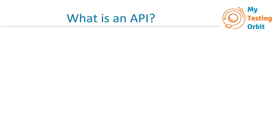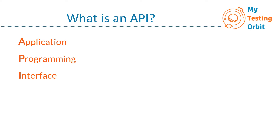API stands for Application Programming Interface. Application can refer to any app on your mobile, a web application, or even a small part of an app. We will come back to the term Programming after understanding what is an Interface.